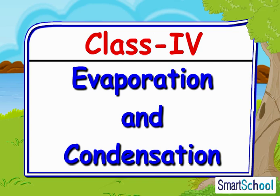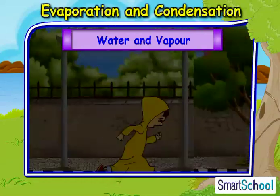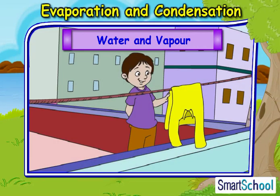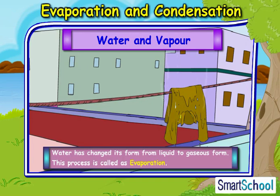In this module, let us understand the natural phenomenon of evaporation and condensation. As a result of a rainy day, Jay's coat gets wet. In order to dry it up, he hangs the coat on the terrace roof. Next morning, he finds that the coat has dried up. Aren't you surprised? How could a water-soaked coat lose all that water?